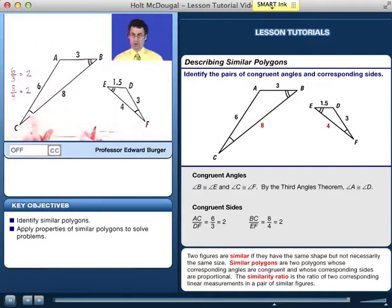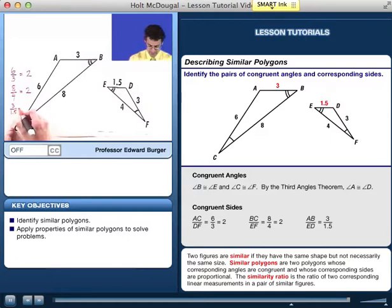And finally, the side opposite the unmarked angle, we see 3, and here we see 1.5. So I see 3 is to 1.5, and that equals 2.